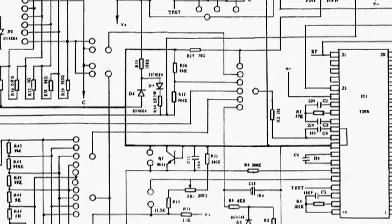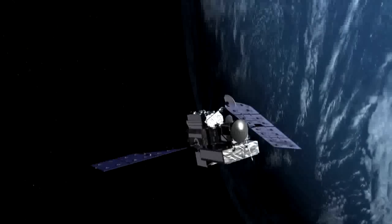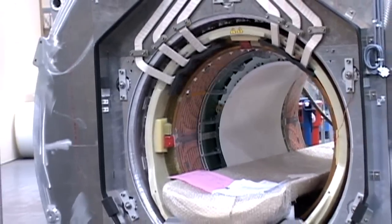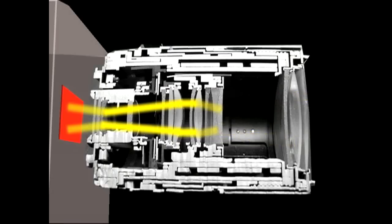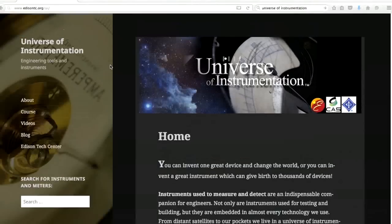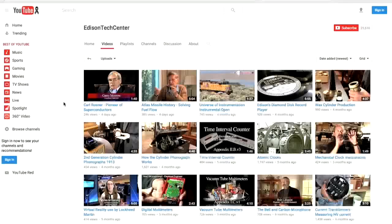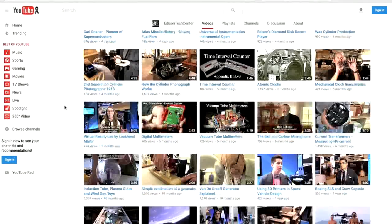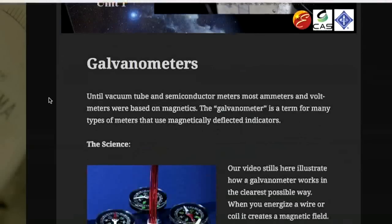Voltmeters and ammeters are a basic building block of many sophisticated marvels of technology, including CTs, MRIs, and photosensors. Learn more about these meters on our website. See more in-depth videos, reference material, and activities at the Universe of Instrumentation website.